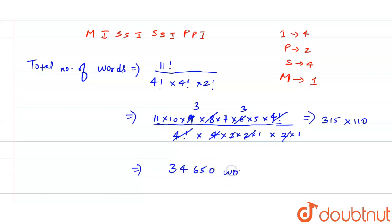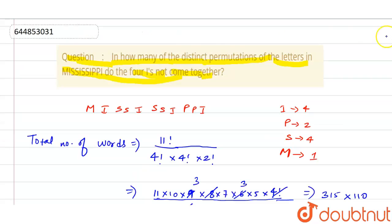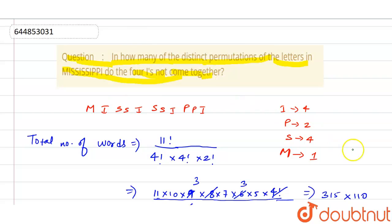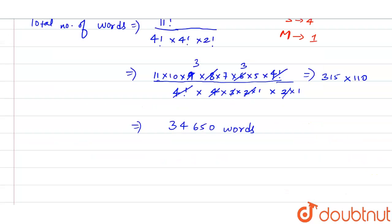So 34,650 total words can be formed from the word Mississippi. According to the question, we need the number of permutations where the four I's do not come together. We find the case where four I's do come together, then subtract it from the total.